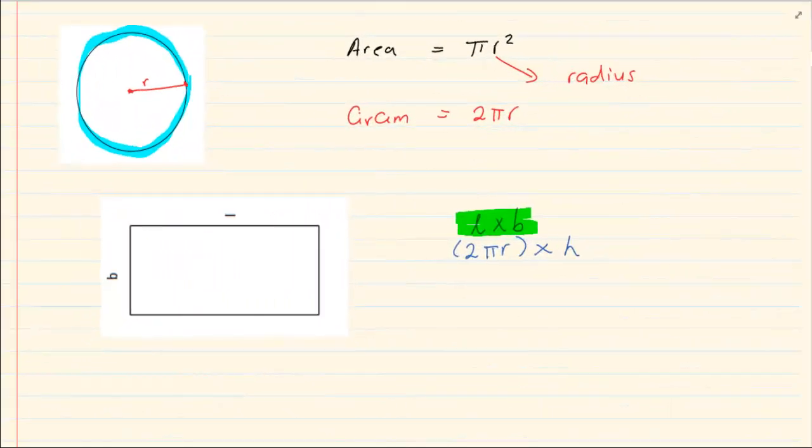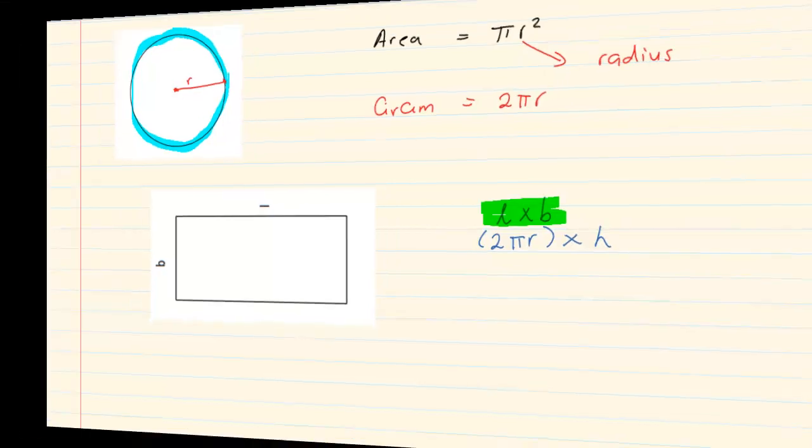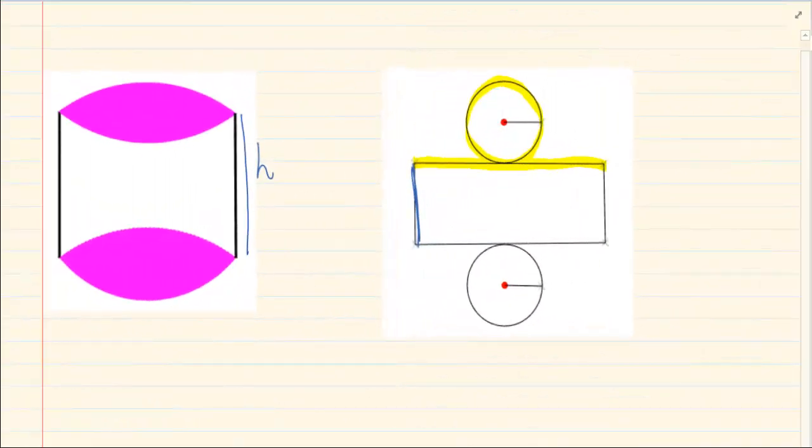In order to be able to do the surface area of a cylinder, you need to know that the area of a cylinder is made up of a circle which is pi r squared, and then it is made up of a rectangle which is 2 pi r times h, and it is made up of another circle which is pi r squared.